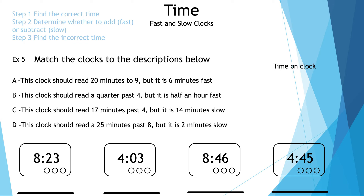Let's read the example: match the clocks to the descriptions below. Description A: this clock should read 20 minutes to nine, but it is six minutes fast. 20 minutes to nine is 8:40. Since it's six minutes fast, we add six minutes to get 8:46, and that is the third clock in the row. We write A underneath 8:46.